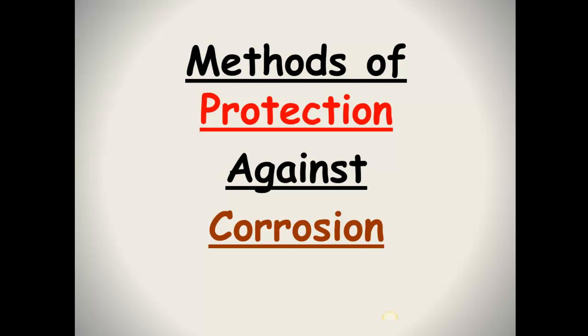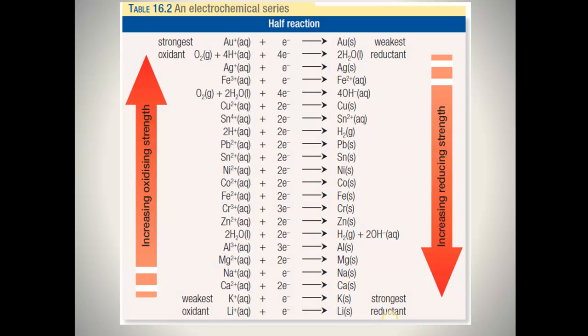Methods of Protection Against Corrosion. Corrosion is the oxidation of iron, or the breakdown of iron, and this occurs in the presence of water and oxygen.